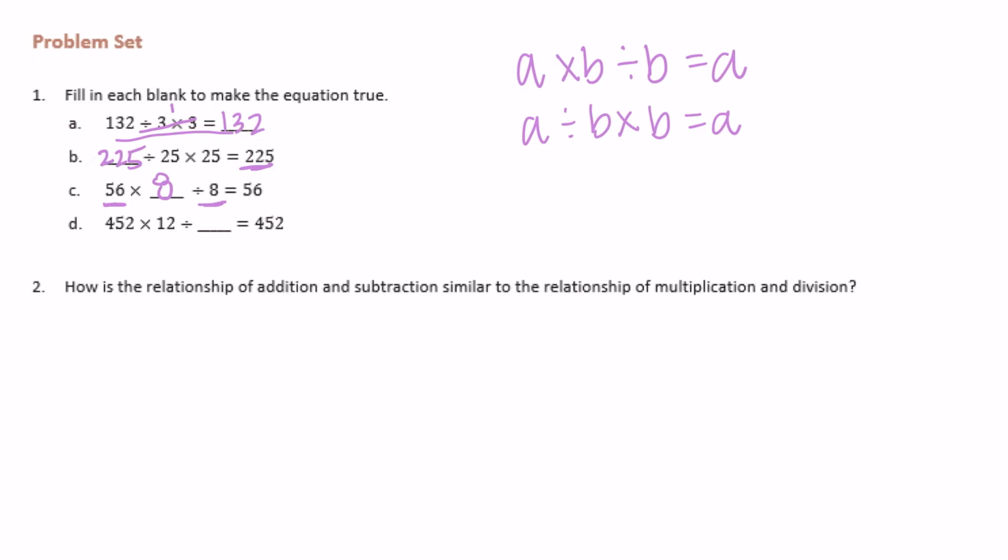In d, 452 times 12 divided by something is equal to 452. We want to start and end with the same things, but we multiplied by 12, so to reverse multiplying by 12 we just need to divide by 12.